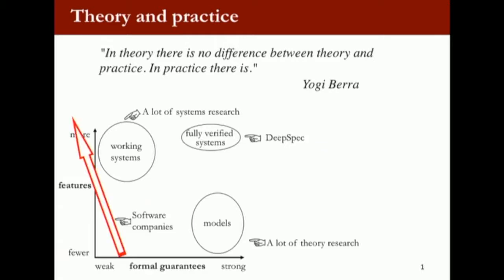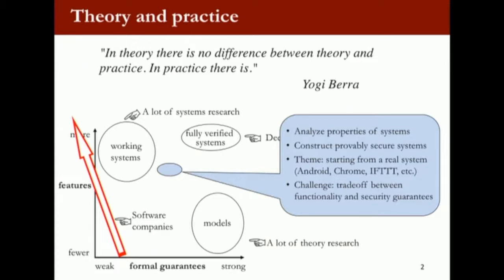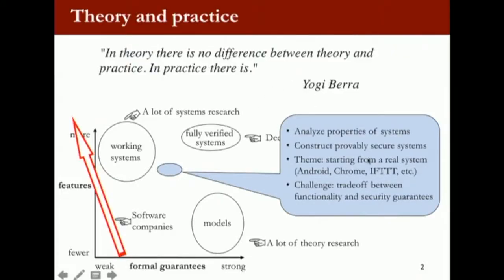Sadly, real software companies are adding more and more features but introducing more and more bugs. The most common bugs we see are still buffer overflows — really simple bugs that are not disappearing; they're appearing more and more often. In this landscape, my research is somewhere in between. I want to analyze properties of systems and construct provably secure systems. The theme of my research is to start from real systems — a real browser, a real Android operating system — look at what nice properties we want, use formal modeling and formal techniques to show that at least at the design level, we have these properties.